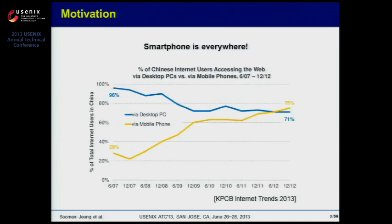Smart devices, including smartphones and tablets, have already become a mainstream computing device, and they are rapidly replacing PCs. For example, the proportion that mobile devices take in the whole internet traffic is constantly increasing.